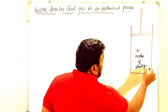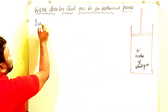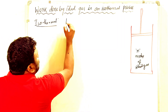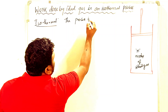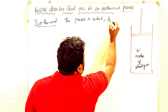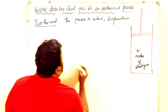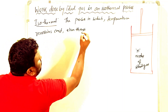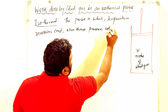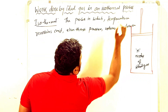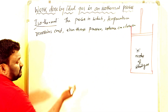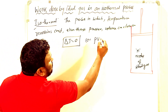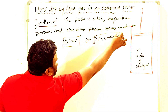In an isothermal process, temperature remains constant even though pressure and volume change. Simply, you can remember: delta T is equal to zero, or PV is equal to constant. That is the condition for an isothermal process.